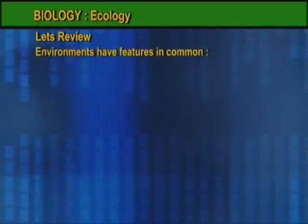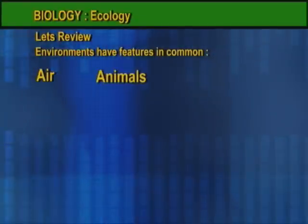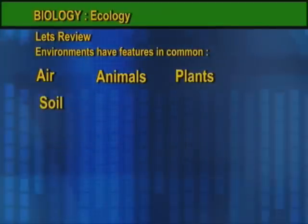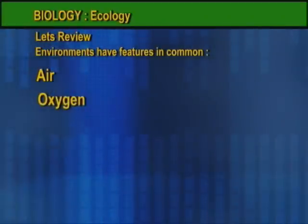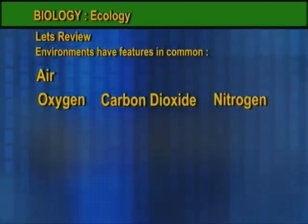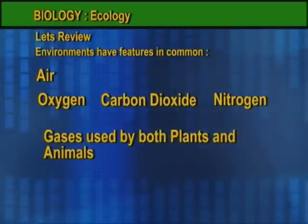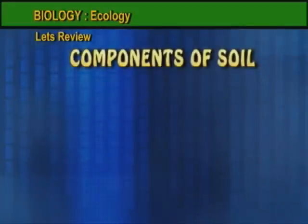Terrestrial and aquatic environments will have certain features in common, namely air, animals, plants, and a specific soil type. Air comprises oxygen, carbon dioxide, and nitrogen, which are gases used by both plants and animals on a daily basis.